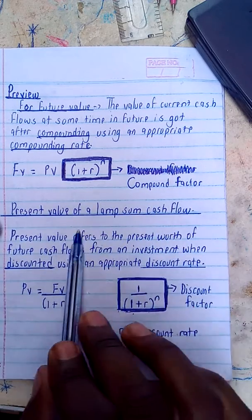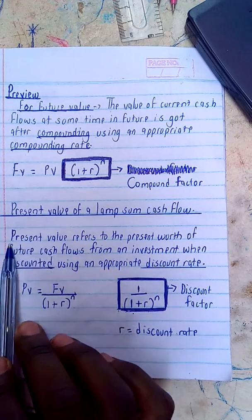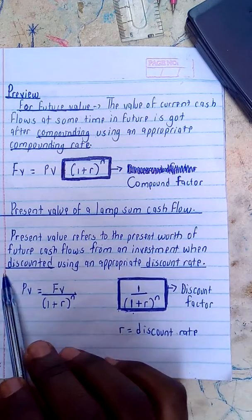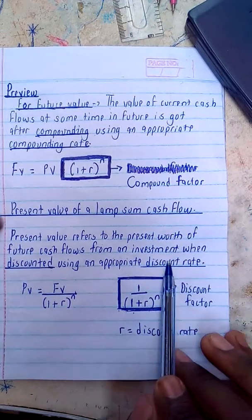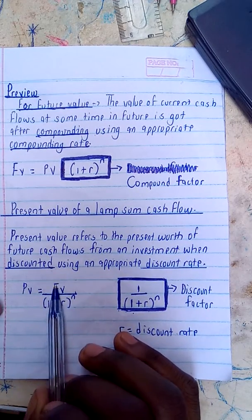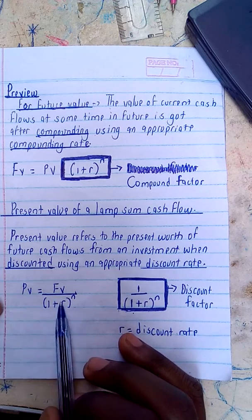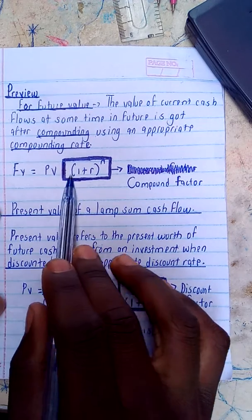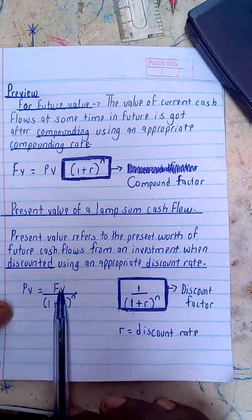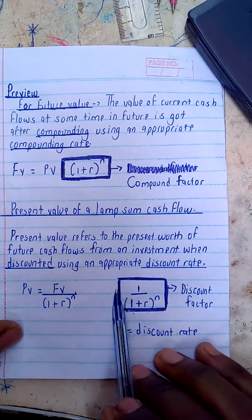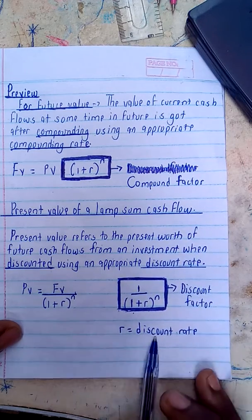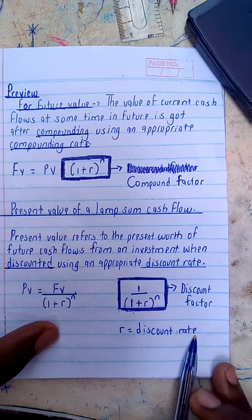Taking you through the present value of a lump sum cash flow: present value refers to the present worth of future cash flows from an investment when discounted using an appropriate discount rate. The formula is: present value is equal to future value divided by brackets one plus r to the power n. The one divided by one plus r to the power n is the discount factor, and r is the discount rate.